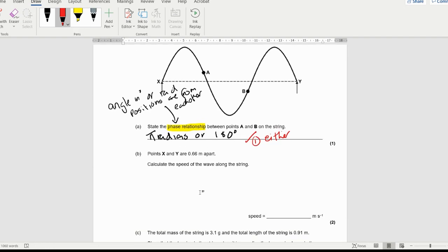Part B: points X and Y are 0.66 meters apart, so the point between this part where it's attached and this part attached is 0.66 meters. Calculate the speed of the wave along the string. So you know that over 0.66 meters, I've got one and a half waves. One wavelength is going to be this divided by 1.5, which is 0.44 meters.